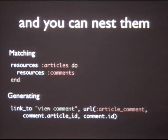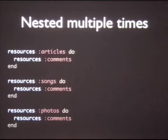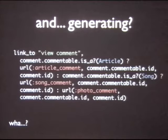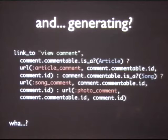You can nest resource routes, and you can nest them multiple times. For example, comments — articles has many comments, songs has many comments. But when generating a nested route, you need to know which parent to use because there are multiple comment routes. If the commentable is an article, generate the article one. That's pretty annoying.